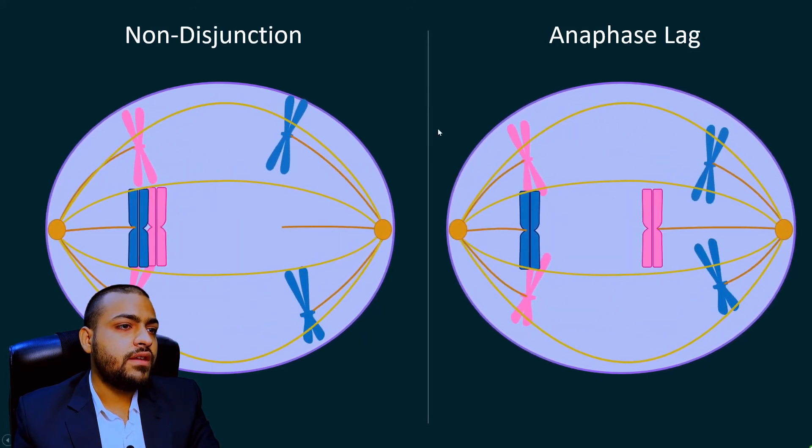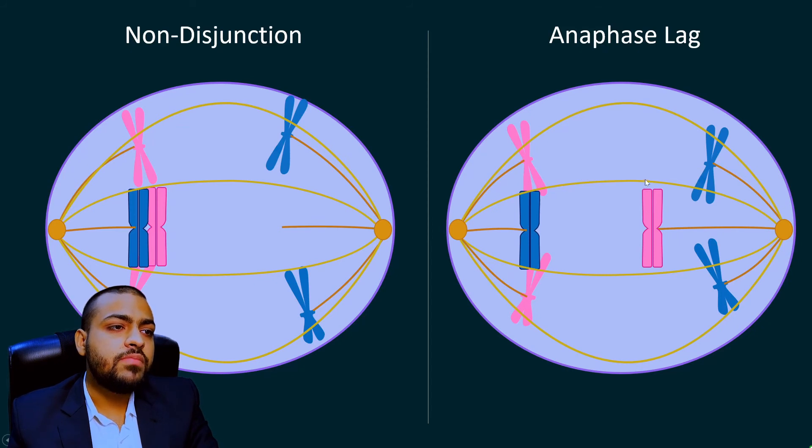So here you can see during anaphase that this spindle pulled both of these chromosomes with it, so these two homologous chromosomes failed to disjoint, they failed to separate. But here there is no non-disjunction, they separated successfully, but this spindle fiber lagged behind.